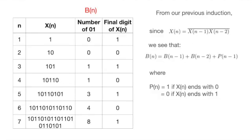Now, we are ready to find B(n), the number of consecutive digits 01 in X(n). As before, let's construct a table and write down a few examples. Now, with the previous induction proof, which says that we obtain X(n) by concatenating X(n-1) and X(n-2) together,